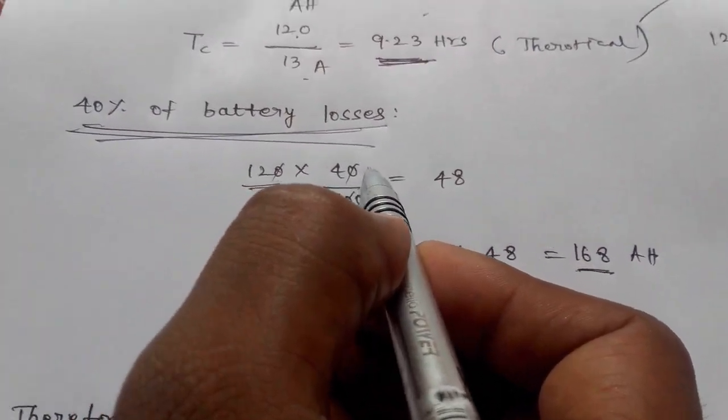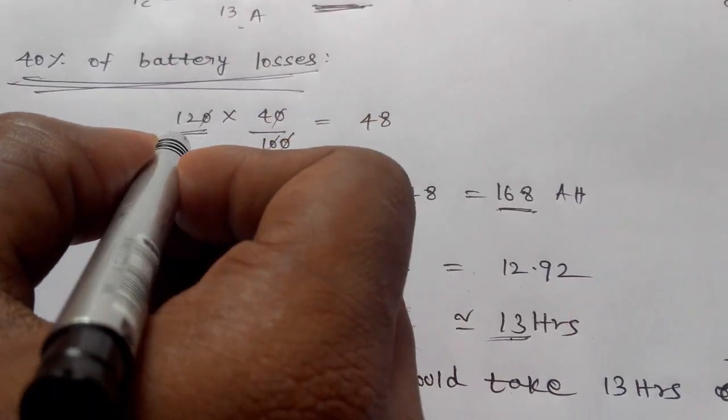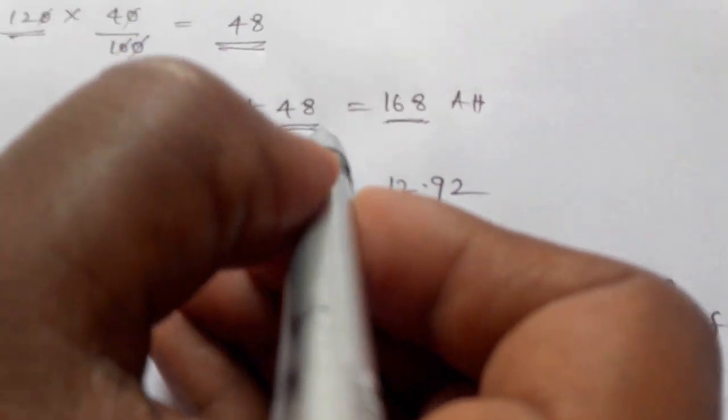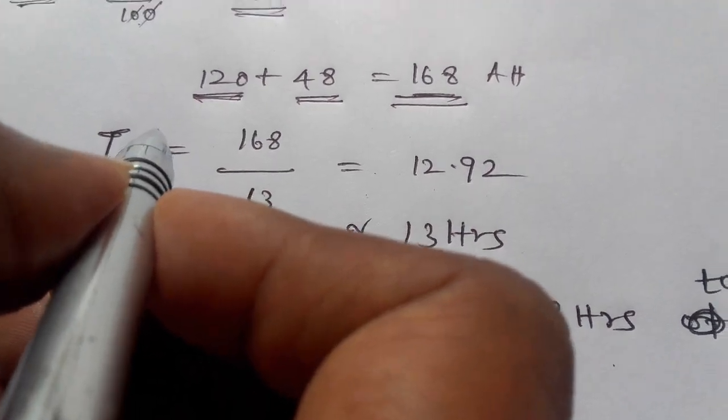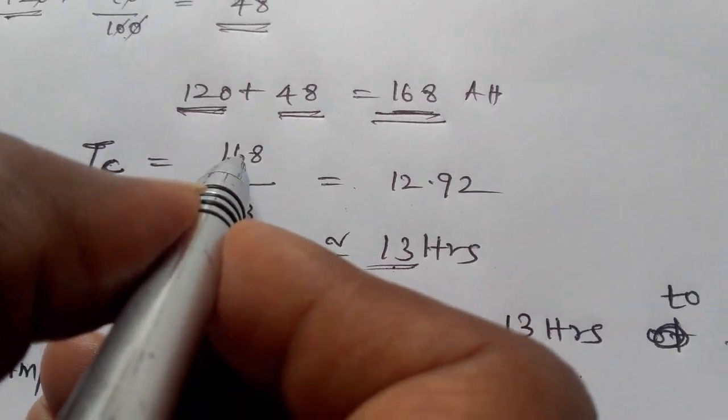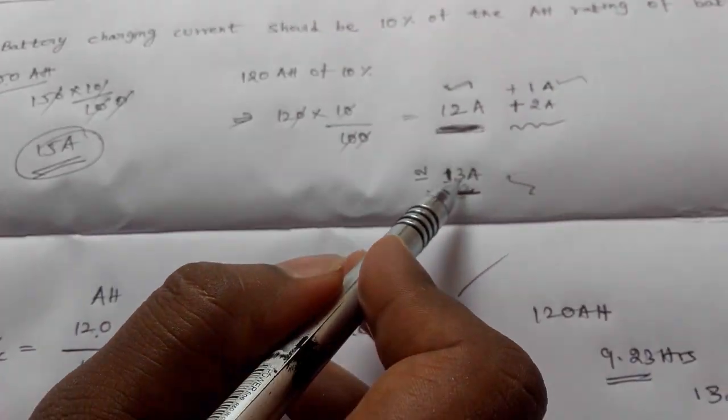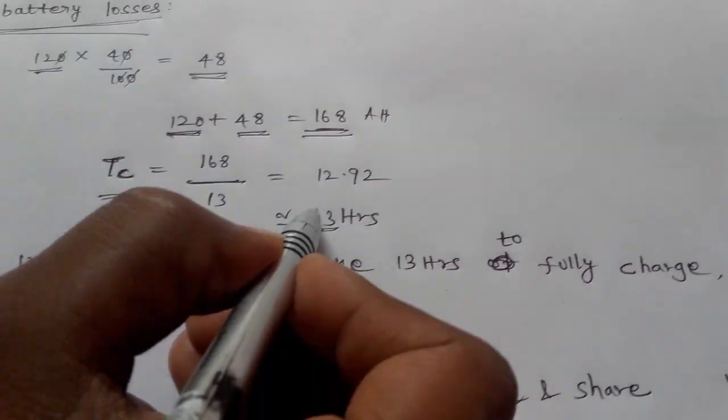In practical scenarios, any battery has 40% losses. You have to add 40% to this. So 120 times 40 divided by 100 equals 48. Adding this: 120 plus 48 equals 168 Ah. The practical Tc equals 168 divided by 13, which equals 12.92 hours, approximately 13 hours.